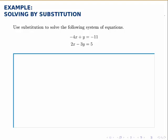Use substitution to solve the following system of equations: negative 4x plus y equals negative 11, and 2x minus 3y equals 5.